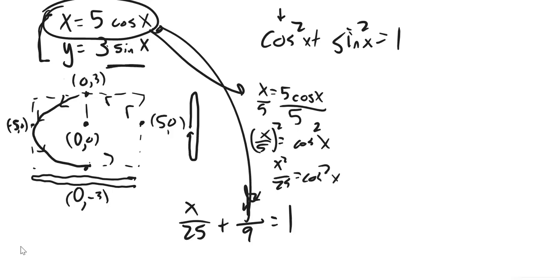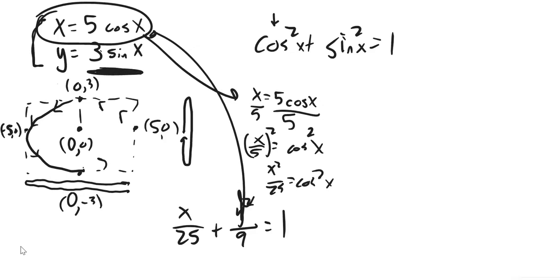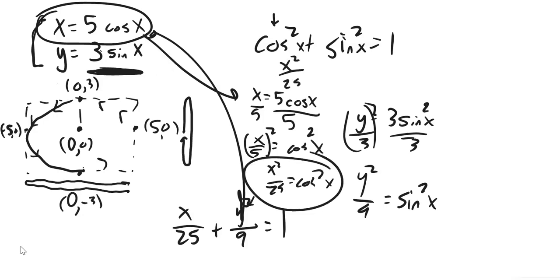I can do similar work with the sine value. Divide by 3 and square it. And, I get y squared over 9 is sine squared. So, x squared over 25, right? Because this is cosine squared. I'm just going to substitute it in for it. Sine squared is y squared over 9 equals 1. And, I've got that.